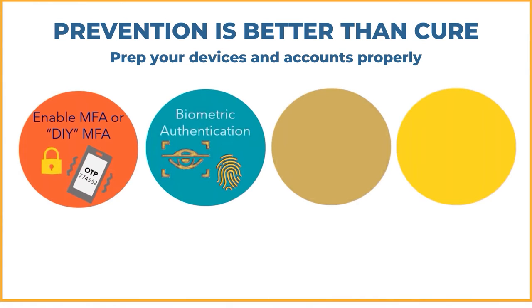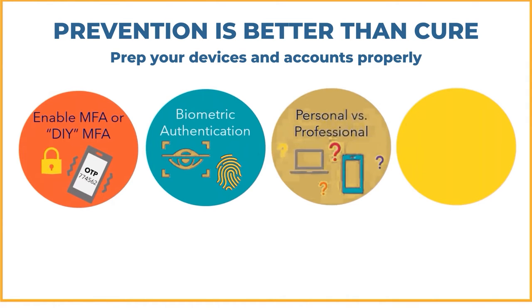Along the same lines, you have biometric authentication, which takes something you know — your password — and combines it with something that you are, something completely unique to you, like facial recognition or a fingerprint. A lot of cell phones are now equipped with that technology, so it's easy enough to enable. You also want to have a proper separation of your professional and personal devices. Now that we're working in a hybrid or remote environment, it's really easy to funnel both your personal and work email into one interface, which is not best practice. Keep email separate.